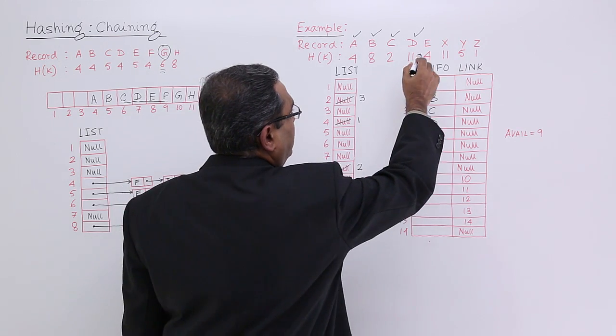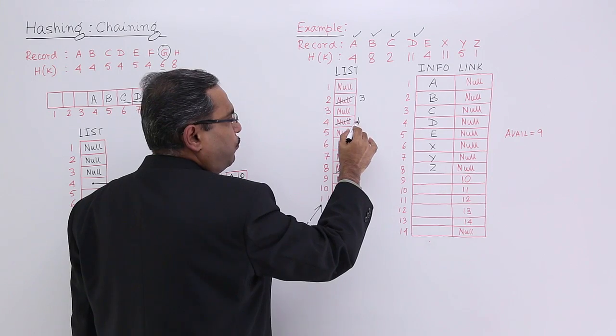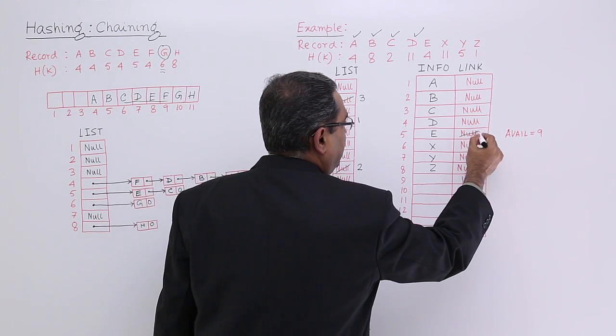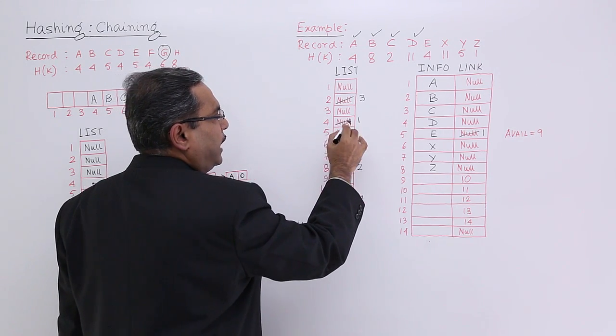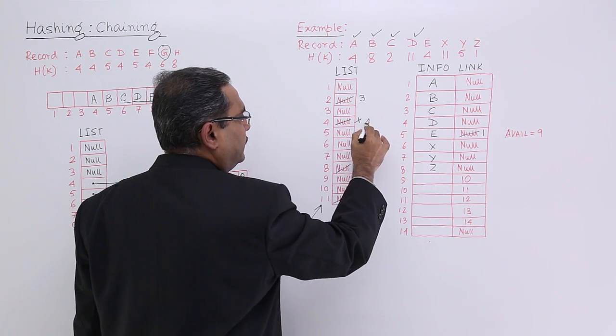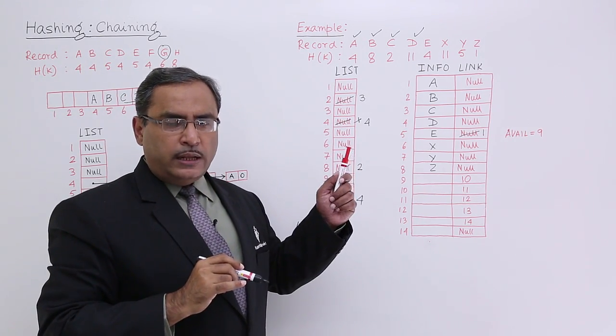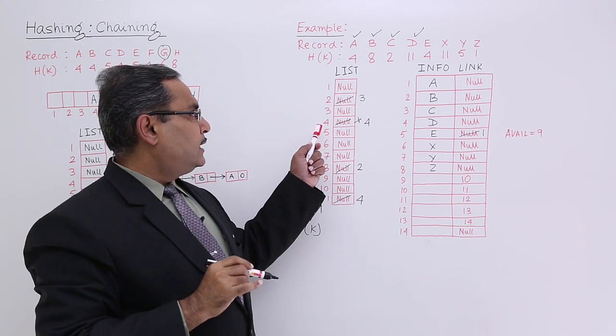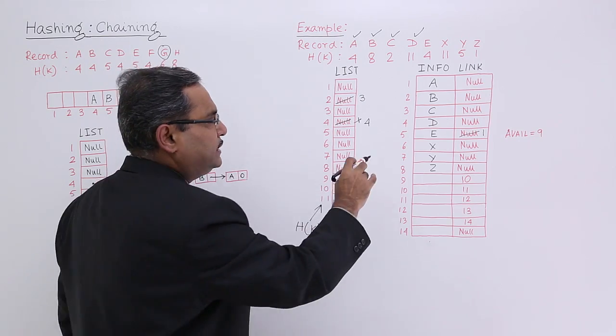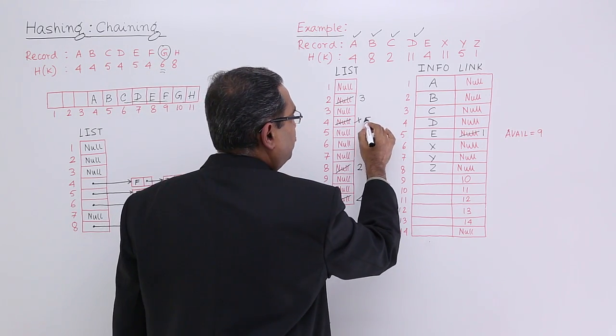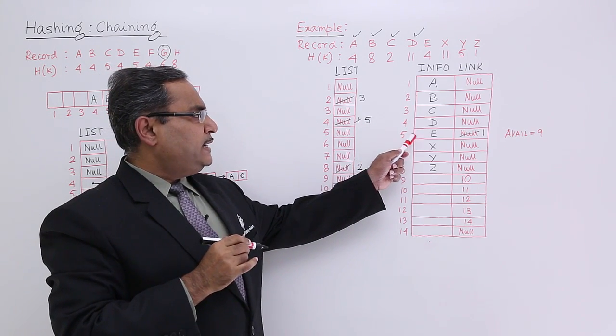Now, for E, 4. E is having address 5. This 1 will be written as a link of E, and at this particular fourth location I shall put 5. What will happen? If I get a node with h of k equal to 4, then I shall come to this location and it is pointing to node number 5. I shall go to node number 5, which is E.